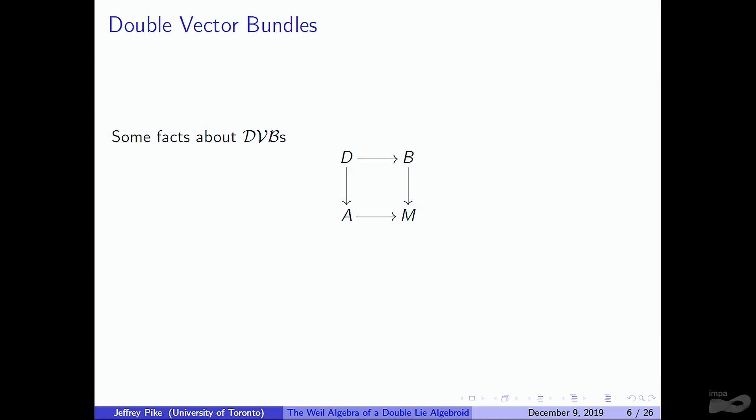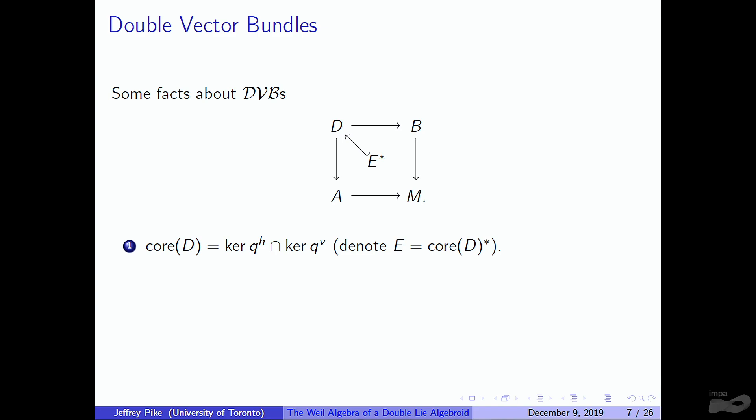If we're going to talk about double Lie algebroids, we should start by talking about the things that underlie them: double vector bundles. Not pictured in the diagram is the core. If Q_H denotes the horizontal projection and Q_V is the vertical one, the core is the intersection of these kernels, and I'm going to call the core E*. Because the core plays an important role in the theory of double vector bundles, I'll start writing it in the diagram. We also have another important bundle called the fat bundle, which I learned about from Raj and Alfonso's paper.